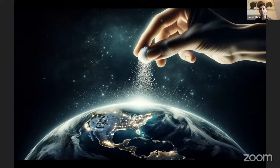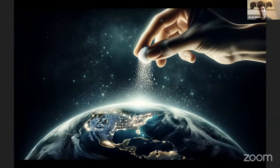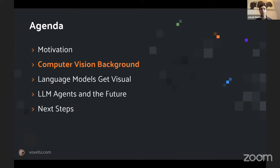I want to caution that everything I'm going to say is true as of now, but this is a rapidly evolving space. Just since I made these slides about a week ago, we've already had two major developments: GPT-4 Vision API coming out with OpenAI's DevDay, and CogVLM, a really powerful vision language model. I'll assume we know some basics about language models but very limited knowledge about computer vision, so we'll start from the basics.